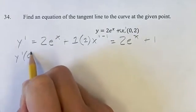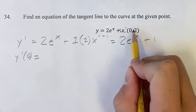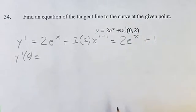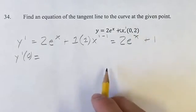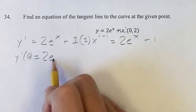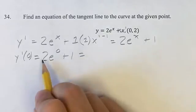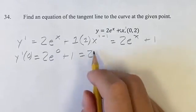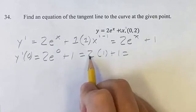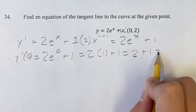So we can do y prime of 0, since x is 0 in this case, and wherever we see x, we can plug in 0. So we have 2e to the 0 plus 1. 2 times e to the 0 is just 1, plus 1. 2 times 1 is 2, plus 1 is 3.